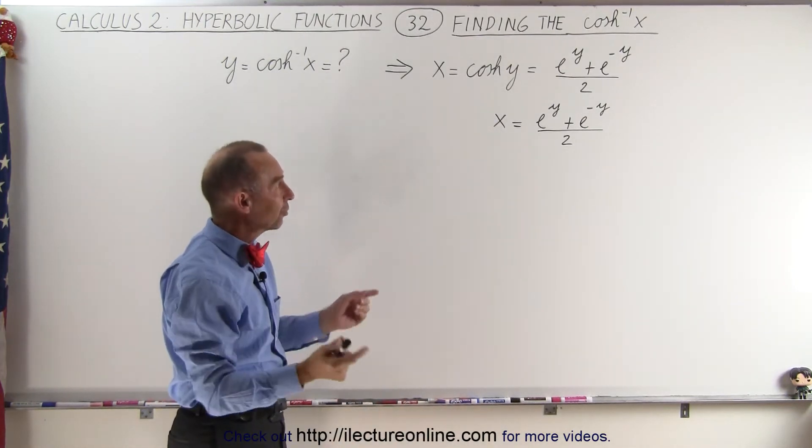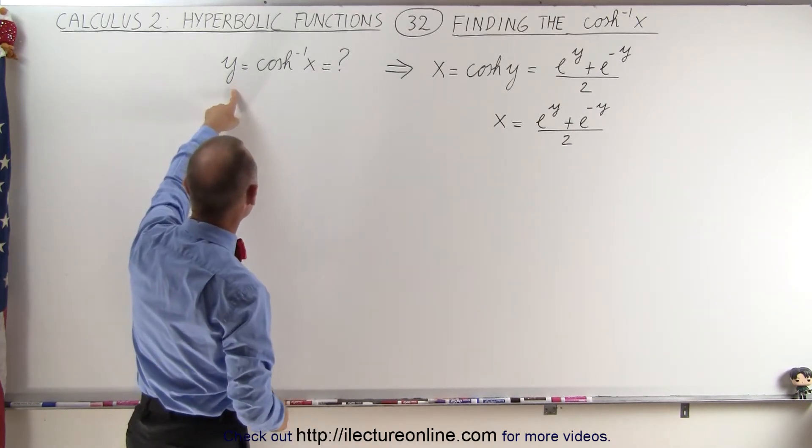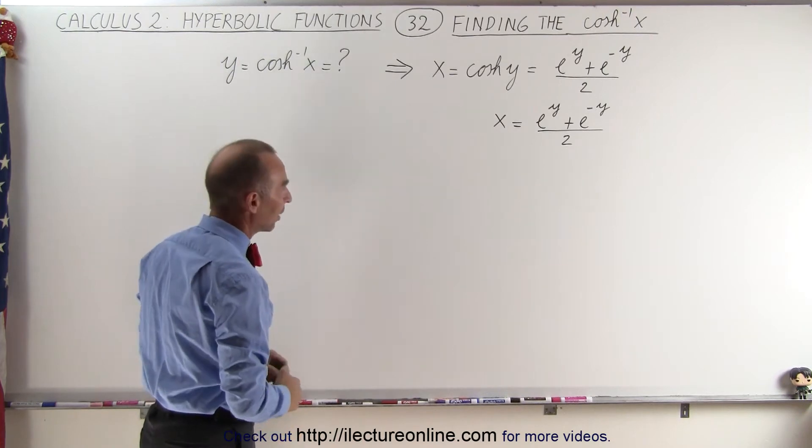We want to solve this equation for y, so we reverse the order of events. We want to solve for y because we know y is equal to the inverse hyperbolic cosine of x.